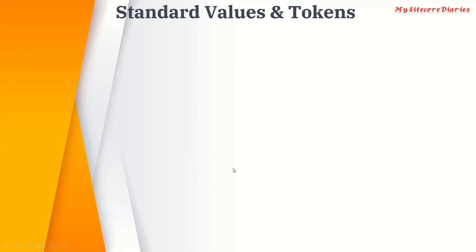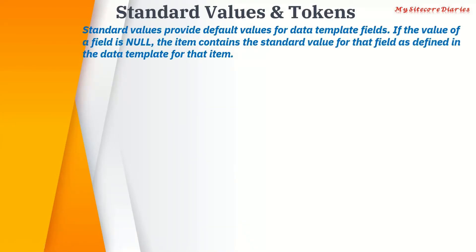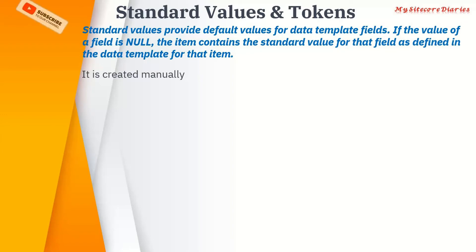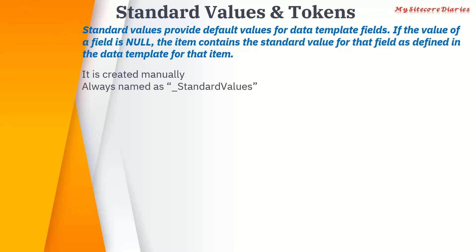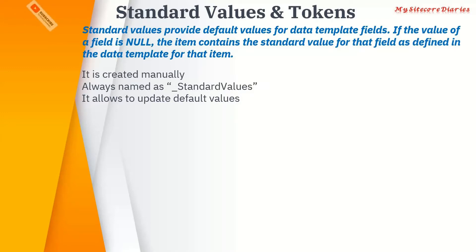Standard values and tokens. Standard values provide default values for data template fields. If the value of the field is null, the item contains the standard value for that field as defined in the data template for that item. Basically, standard values are used to provide the default value. So when you create a template and from the template you create content, there are fields for which you want to give some default values - then you can use standard values. Standard values must be created manually. Once you create a template, you create them manually, and it automatically creates an item called underscore standard values - it is always named underscore standard values.